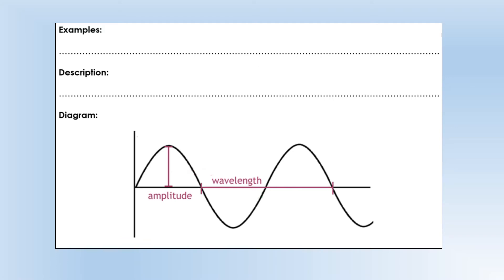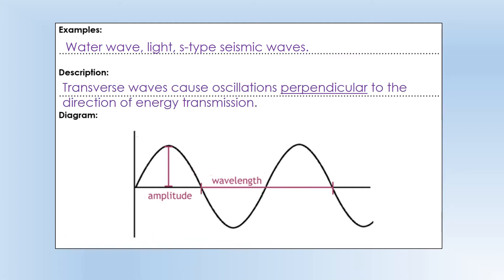Now we look at another categorization: transverse waves. Both electromagnetic and mechanical waves can be transverse waves — it's a separate categorization system. Examples of transverse waves include water waves, light, and certain seismic waves — specifically the secondary or shear-type seismic waves. Transverse waves cause oscillations perpendicular to the direction of energy transmission. So if energy is moving left to right, the oscillations are up and down — at 90 degrees to the direction of travel.